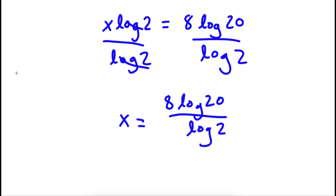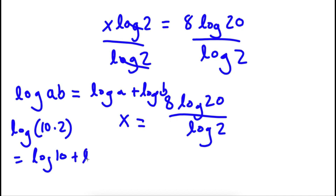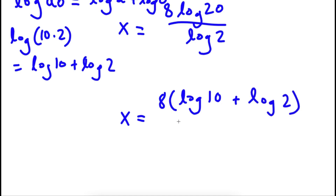Now, if I have something in the form log ab, this is equal to log a plus log b. So in this case, 20 we could rewrite as log 10 times 2, which would be equal to log 10 plus log 2. So now I have x is equal to 8 times (log 10 plus log 2), all over log 2.